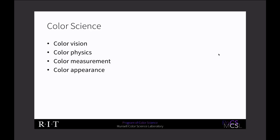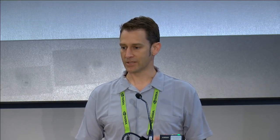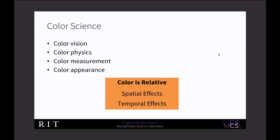Color measurement is a big piece — X-Rite is one of the big companies in this space. It used to be really hard, but now instruments are much more affordable. Color appearance is really about how things influence the color that you see. There are spatial effects and temporal effects that always affect what you see. Spatial meaning what's happening in the neighborhood of the color you're looking at, temporal meaning what you looked at before affects what you perceive when you look at something new.